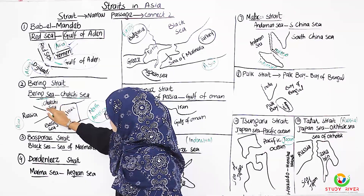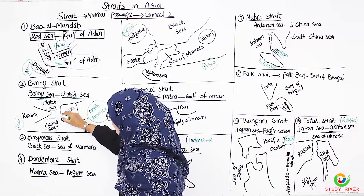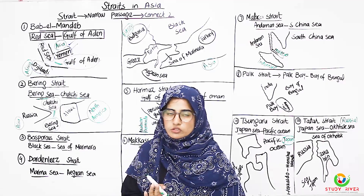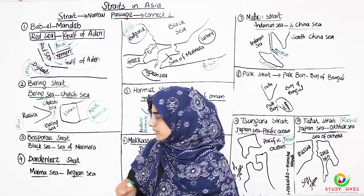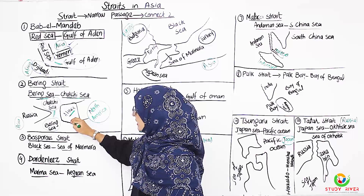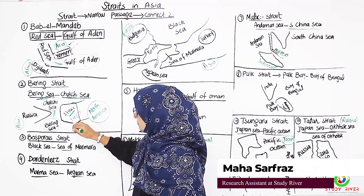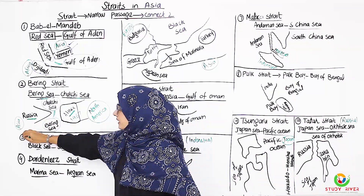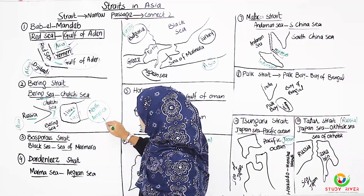Now we will see which two land masses are connected to each other. If we look at this land mass, it is Alaska. Alaska is a part of the USA, purchased in 1867. On the other side is Russia. Looking at the continents, one side is Asia, where Russia is located, and the other side is North America.